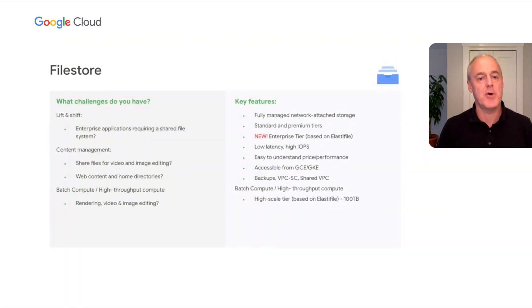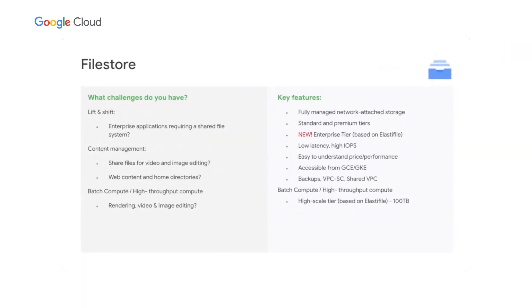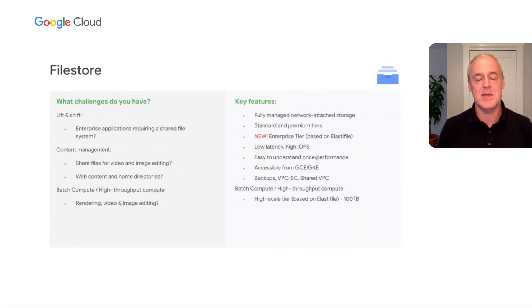Filestore is our file share product for customers moving from on-premises to Google Cloud — use cases include sharing video files, web content, and home directories. We have a range of offerings: standard and premium tiers as zonal products, and we recently announced a new regional enterprise tier based on the Elastifile technology we acquired. This lets customers build highly available and resilient applications in Google Cloud. We've ensured easy integration with VPC service controls and network capabilities for security boundaries, together with easy integration with Google Compute Engine and Google Kubernetes Engine through CSI drivers.